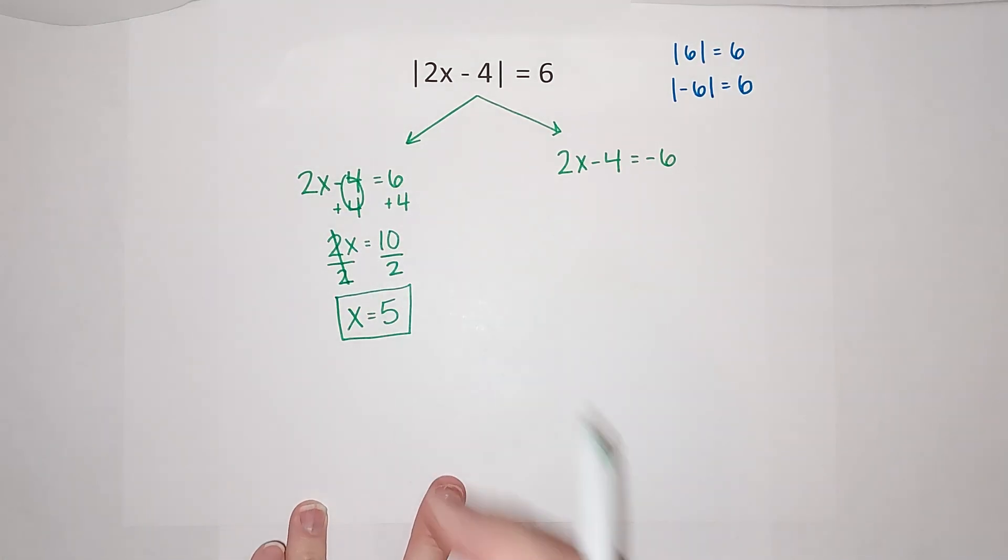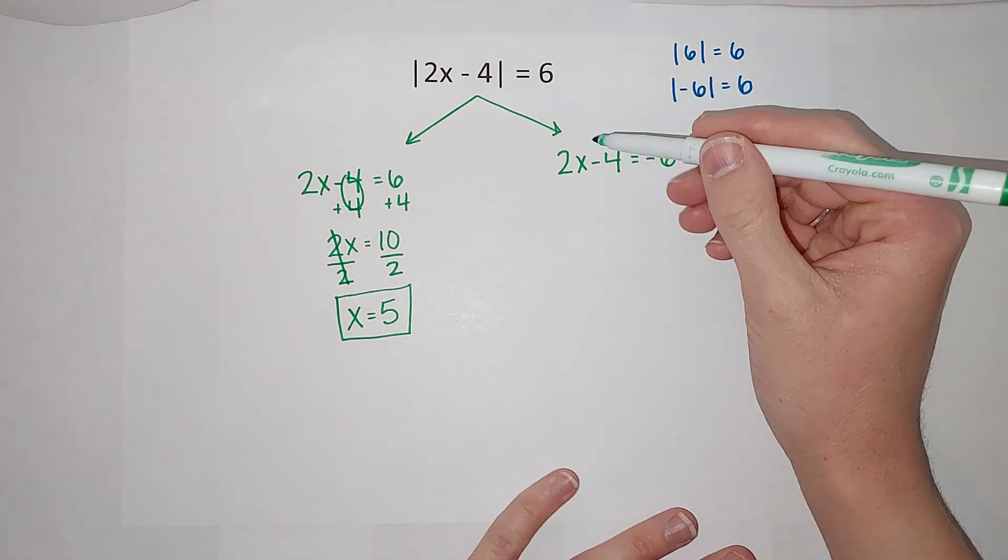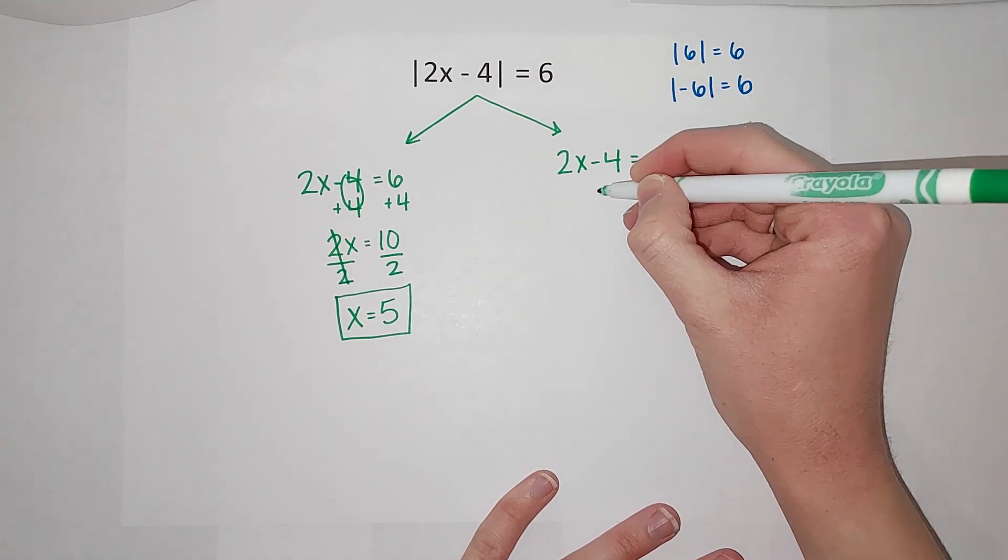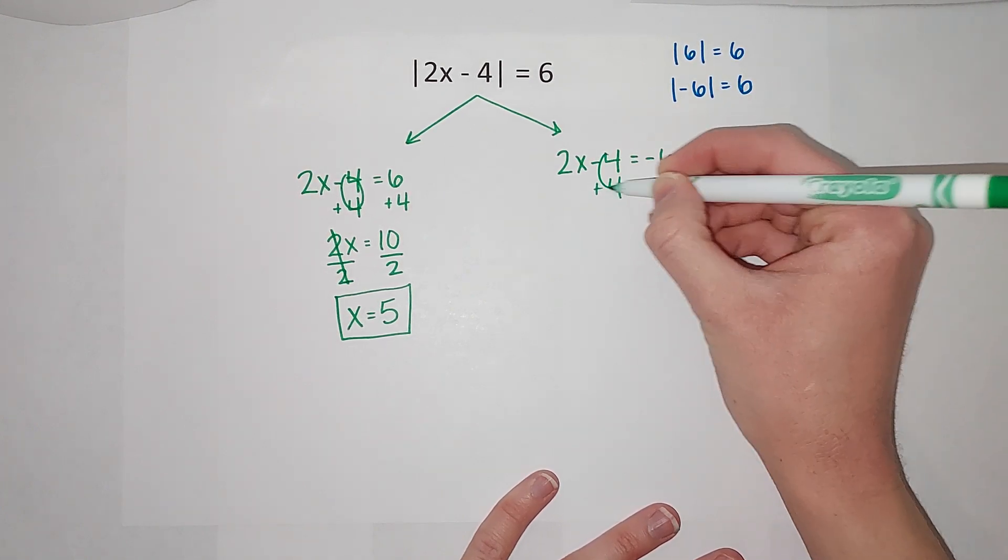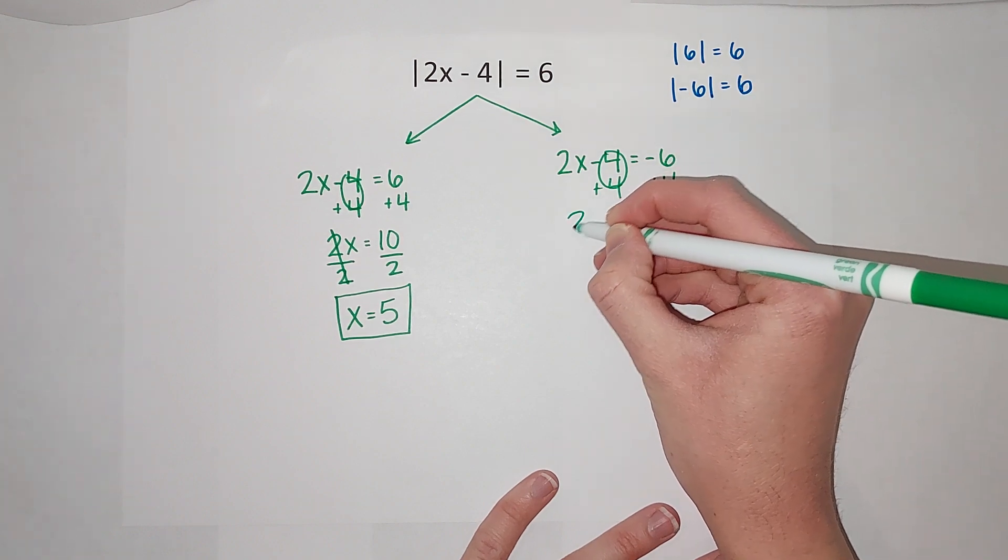Those go away, so I'm left with x equals five. So one possible answer is five. But there's another possible answer, so again I'm going to add four to both sides. Those go away, I'm left with 2x.